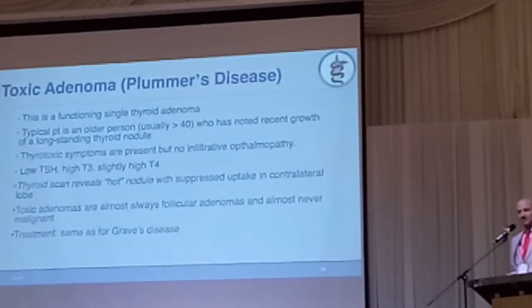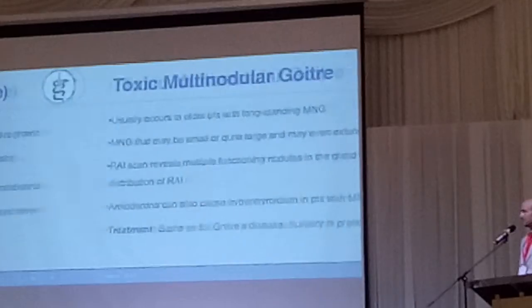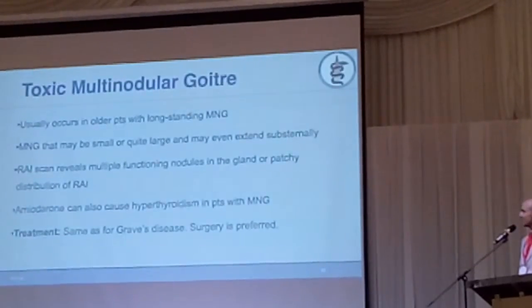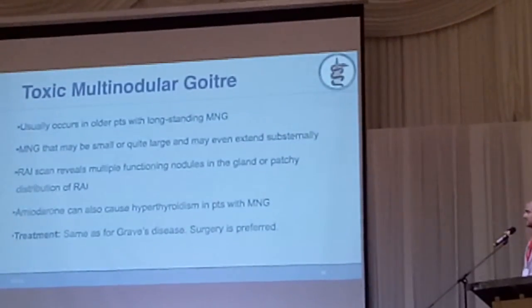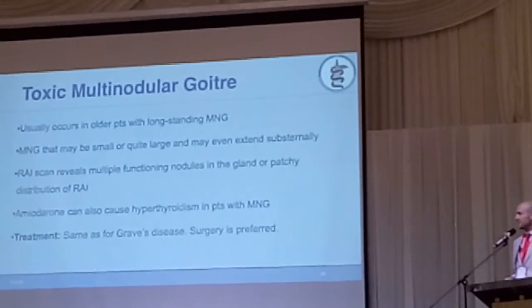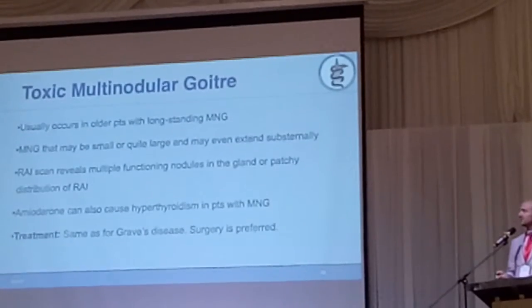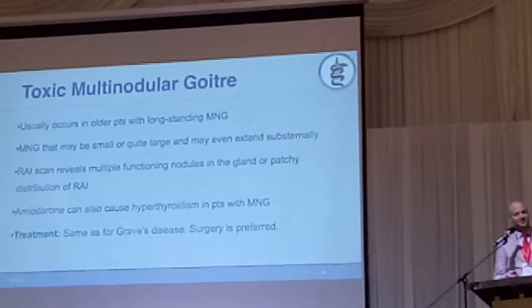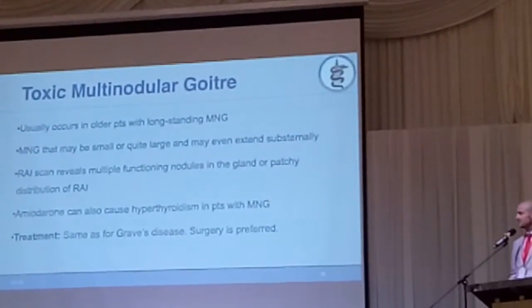These are usually follicular adenomas when you look at pathology, and the treatment is the same as Graves'. Toxic multinodular goiter usually occurs in older patients, and you could see multiple functional nodules on scan, but again, these scans are not really necessary.